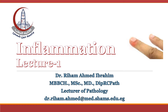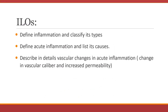Inflammation is one of the key pathologic processes that we are going to study together over seven lectures. It is the second topic after cell injury. By the end of this lecture, we should be able to define inflammation and classify its types, define acute inflammation and list its causes, and describe in detail the vascular changes in acute inflammation, such as changes in vascular caliber and increased permeability.